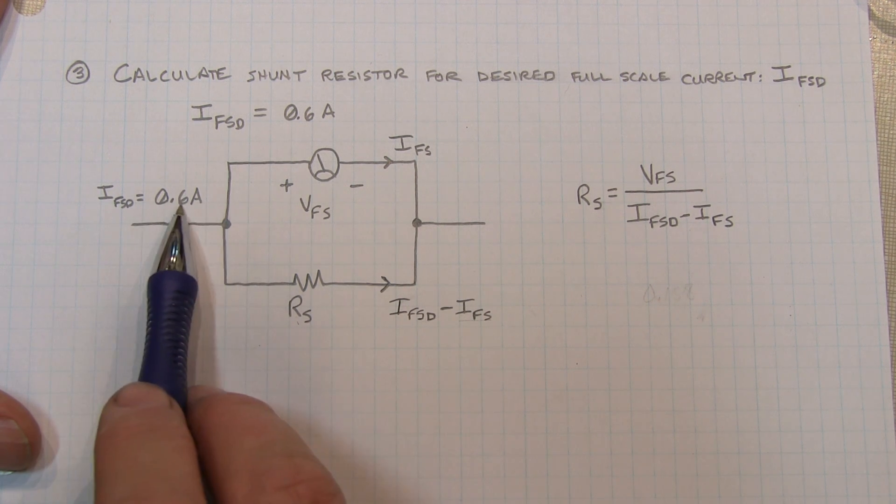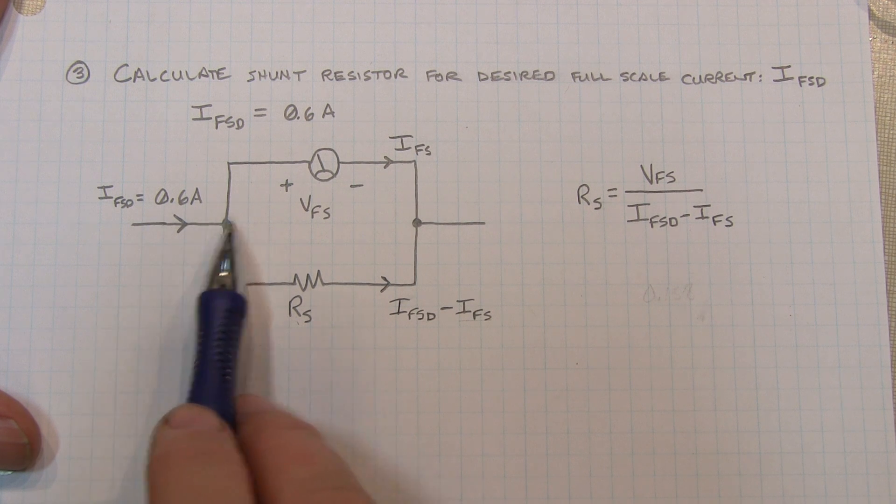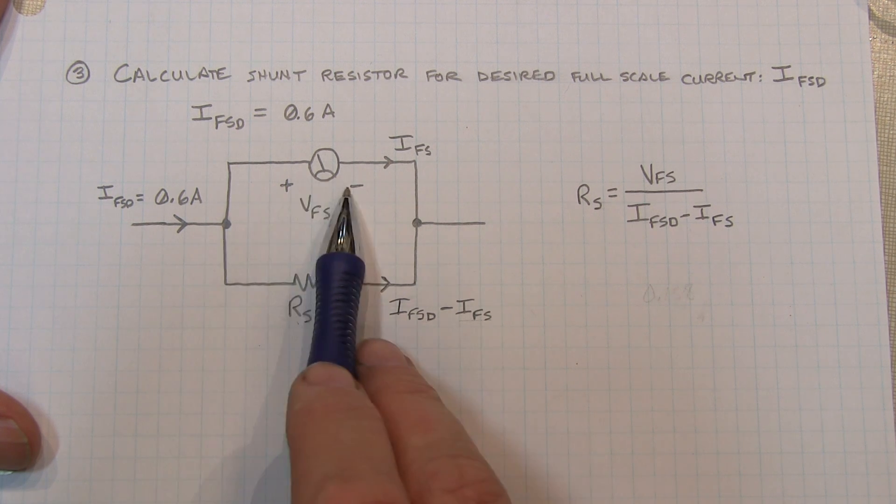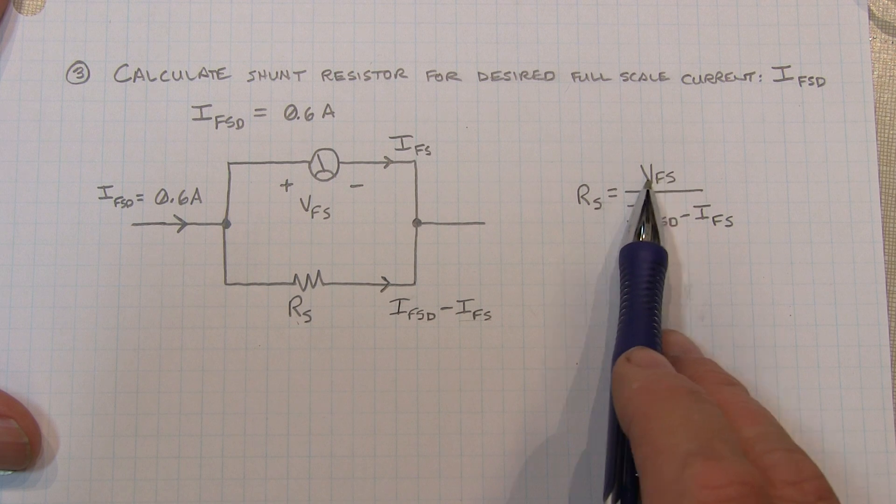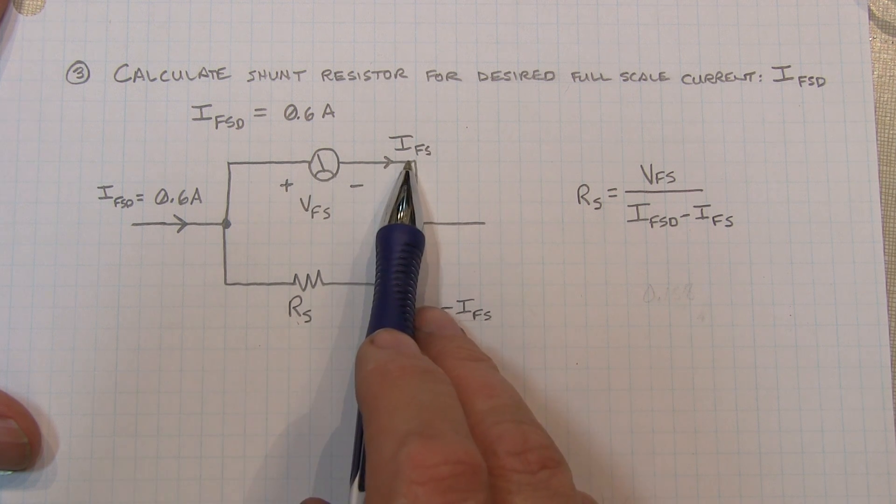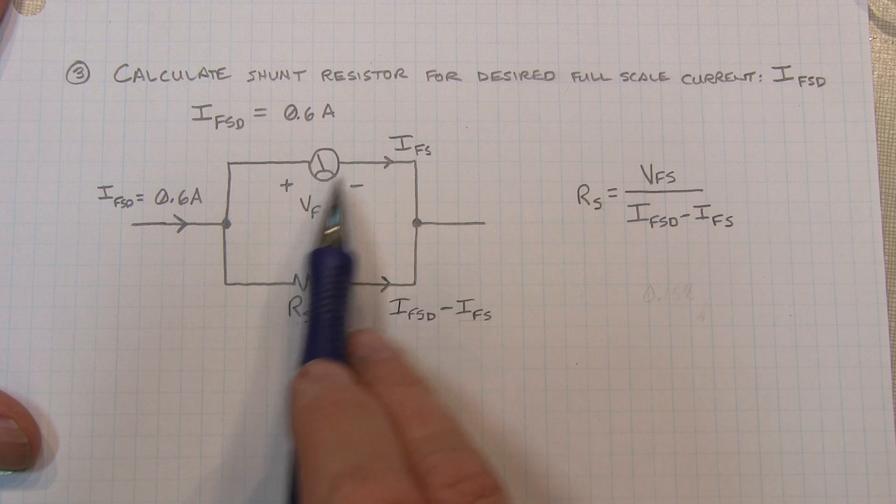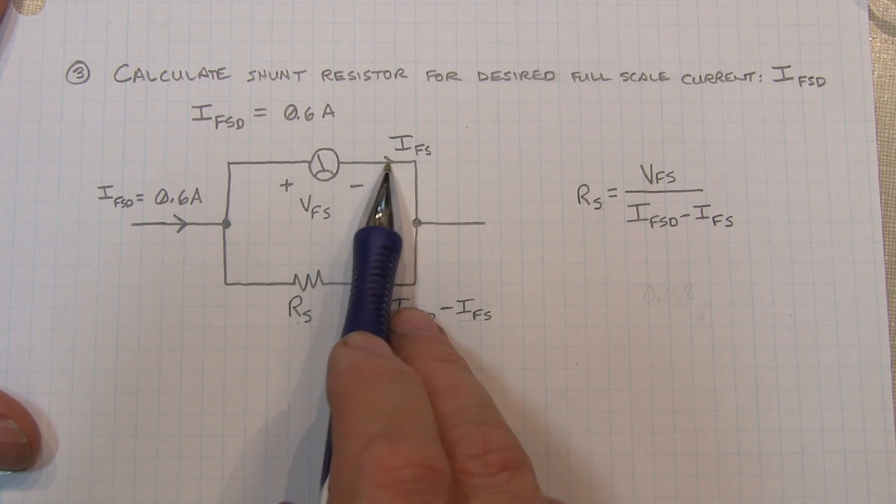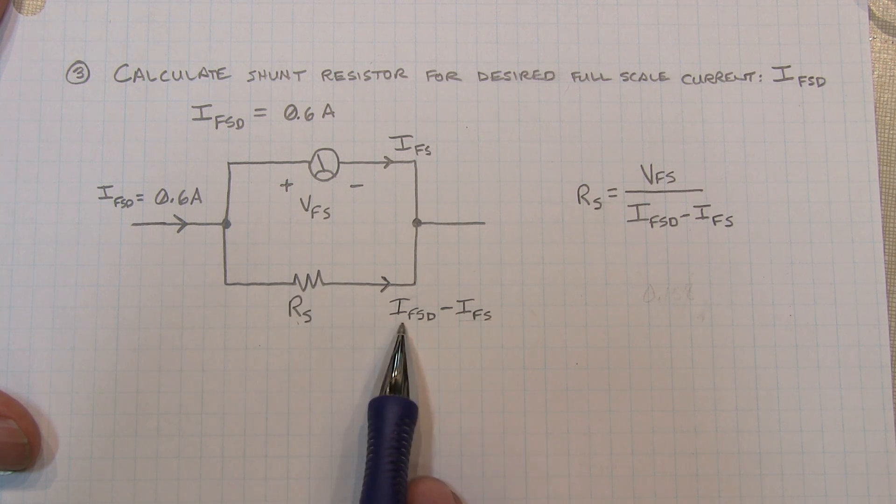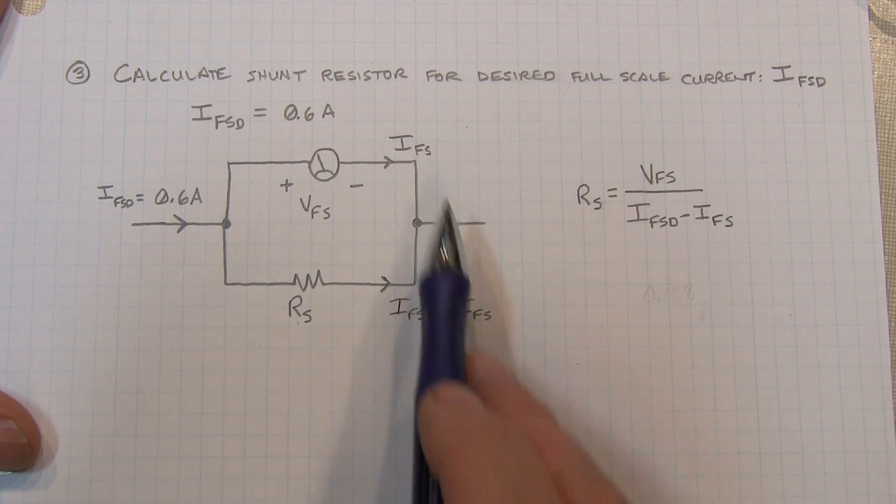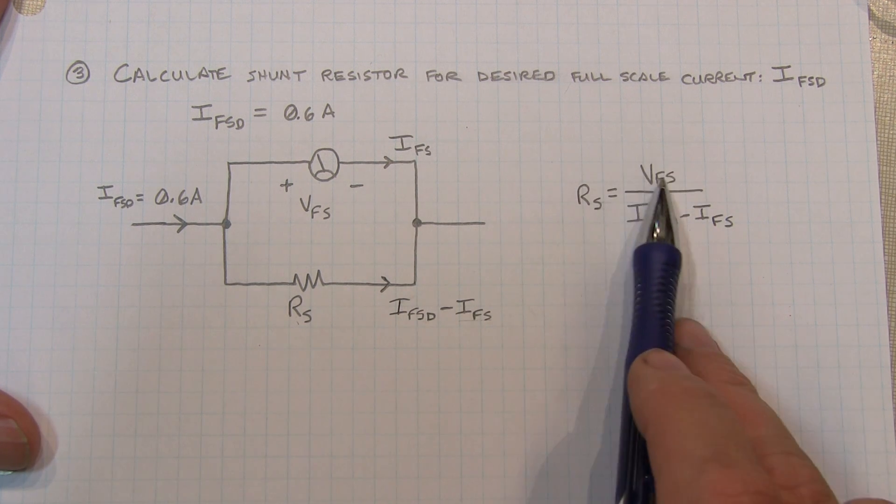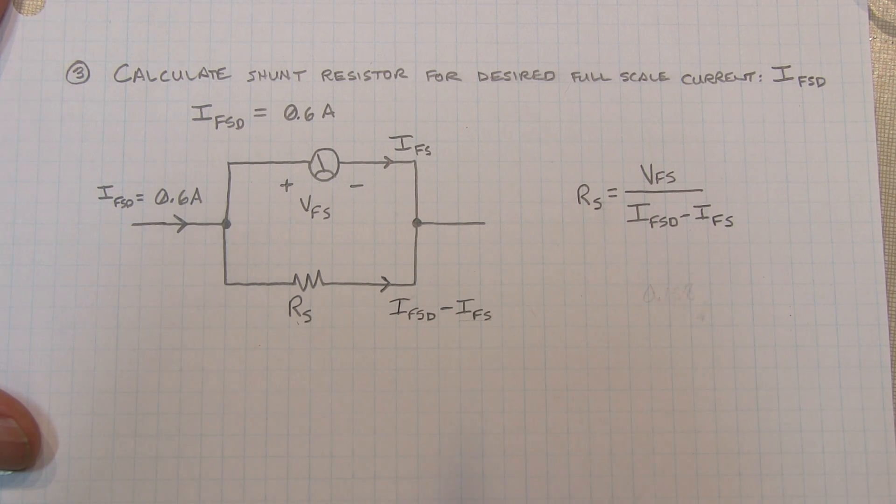Now to calculate the value of a shunt resistor to put in parallel with the meter movement to reach our desired full scale deflection is a very simple calculation. We know that we're going to have 600 milliamps of current flowing through this parallel combination at full scale. We also know the voltage across the meter at full scale, so that tells us the voltage across the resistor, we'll call that VFS. We also know that the current flowing through the meter is that 200 microamps that we measured earlier. That means that the difference between the full scale deflected current and the meter current is flowing through the shunt resistor. So the current through the shunt resistor is the full scale deflected current, 0.6 amps, minus the full scale current of the meter, which is 200 microamps. We know the voltage across the resistor, we know the current through it. It's a simple matter of computing that resistor.